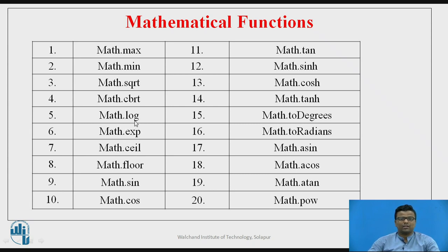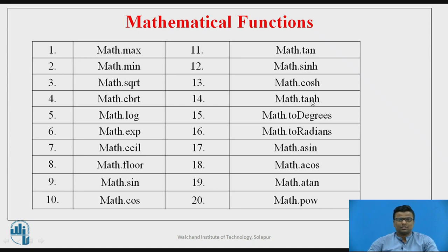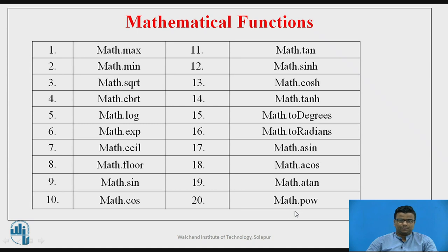math.log and math.exp give the logarithmic value and the exponential value (e raised to a number). math.ceil and math.floor: if we have a fractional number and want to round up or round down by one, we use ceil or floor. math.sin, math.cos, and math.tan are the trigonometric functions. We also have hyperbolic functions: sinh, cosh, and tanh. math.toDegrees converts radians to degrees, and math.toRadians converts degrees to radians. math.asin, math.acos, and math.atan can be used to calculate cosec, sec, and cot values. Finally, math.pow calculates a number raised to a power — for example, 2 raised to 3.